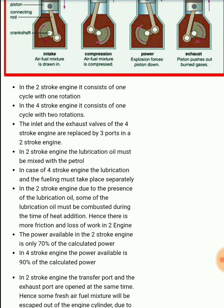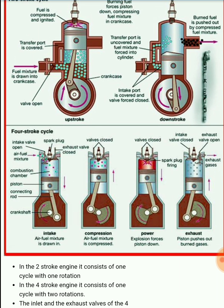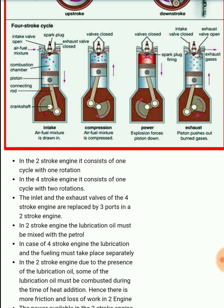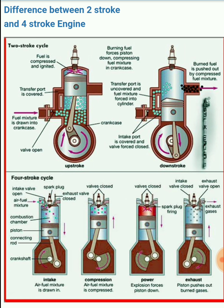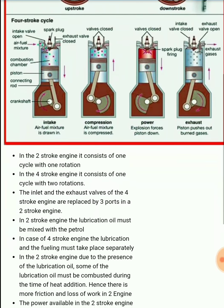The next difference is that in a four-stroke engine there are inlet and exhaust valves. In the two-stroke engine, these valves are replaced by three different ports: the transfer port, the exhaust port, and the intake port. So in four-stroke we have inlet and exhaust valves, whereas in two-stroke those are replaced by three ports.